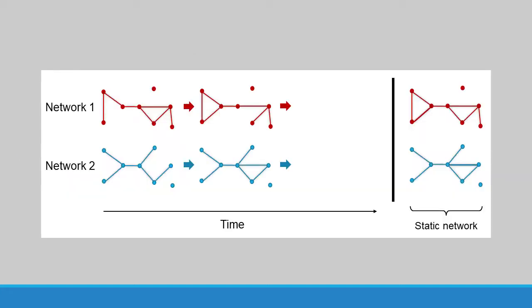One solution is to model temporal networks as static networks by aggregating all the temporal events into one static network. Then, we can apply static methods of comparison to the aggregated network.